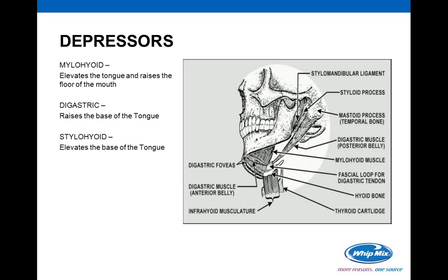Then there's a whole group of depressor muscles that help pull the mandible down: the mylohyoid, the digastric, and the stylohyoid — all the way to the base of the tongue.